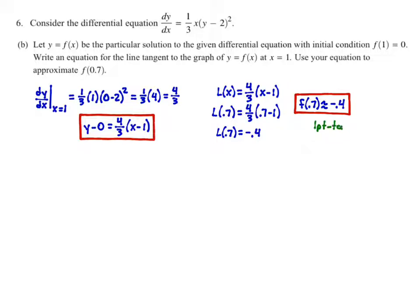As far as points go here, you're going to get one point for the tangent line equation. So one point for this guy. And then you're going to get one point for your approximation of f(0.7). So one point for that guy.